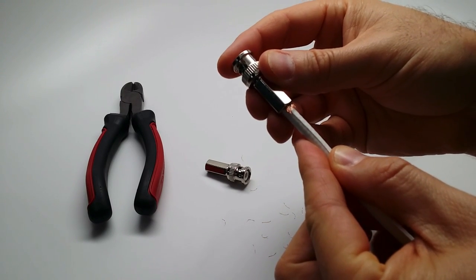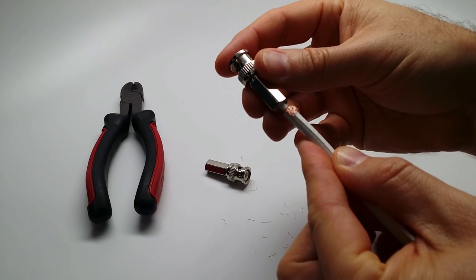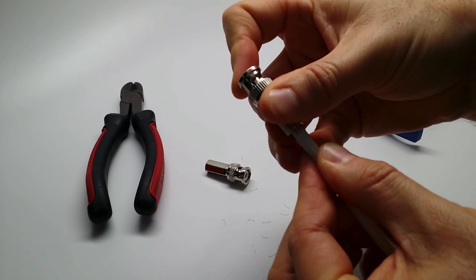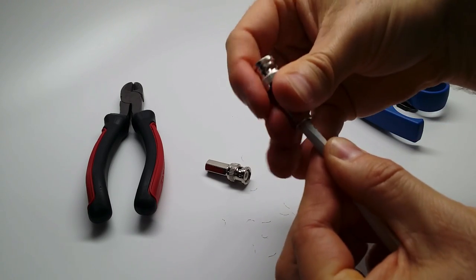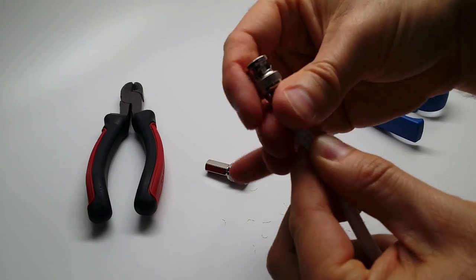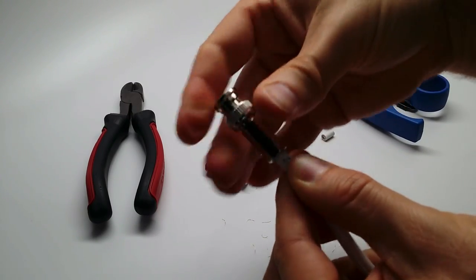You can tell if you push it on like that, you can just barely feel that inner mouth grab the core of the coax. That's how you know the length is just right. 9/16ths of an inch - I've tested a bunch of times, and that's about perfect.